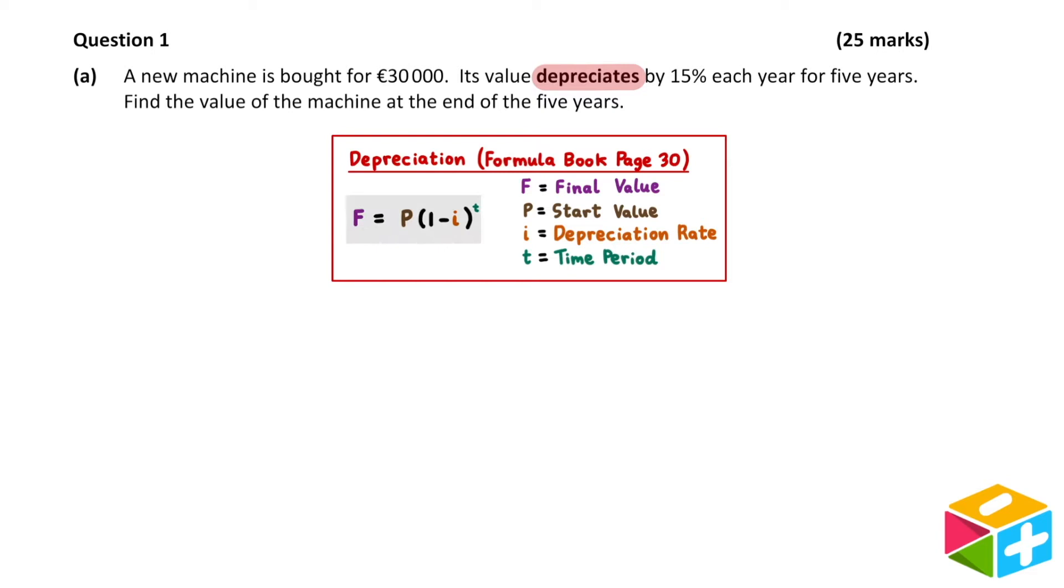This formula states that f is equal to p times 1 minus i to the power of t. To be able to use this formula, we need to identify the values for each of these letters. Let's start with f, which represents the final value. We are asked to find the value of the machine at the end of the 5 years, so we don't know the final value. That's what we're trying to find.